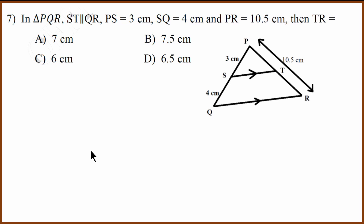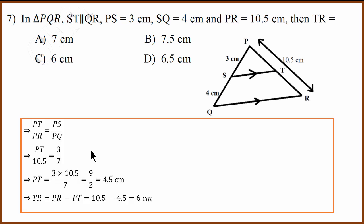This is a basic proportionality theorem or you can also use the similar triangle property. I'm going to use similar triangle property. Similar triangle PST is similar to PQR. Therefore PT divided by PR will be equal to PS divided by PQ. As you solve you will get PT equals four and a half centimeter. If that is four and a half the whole thing is ten and a half. This has to be six centimeter. The correct answer is six centimeter.